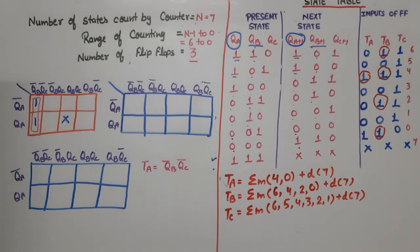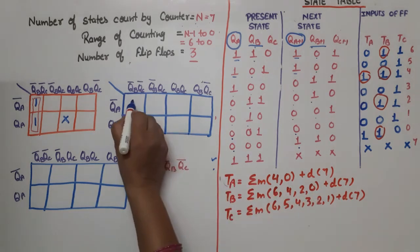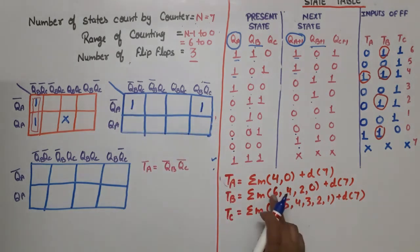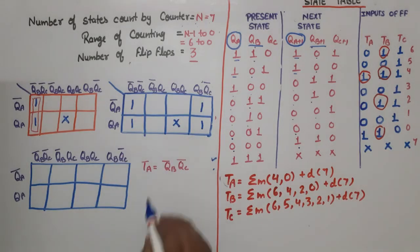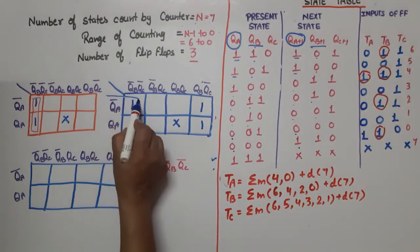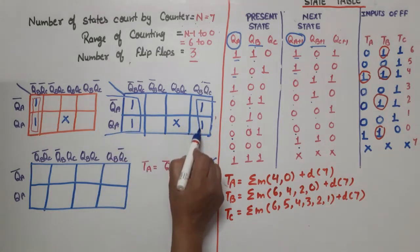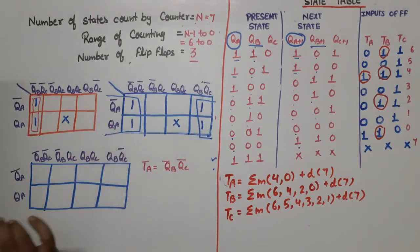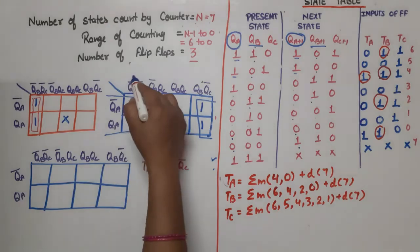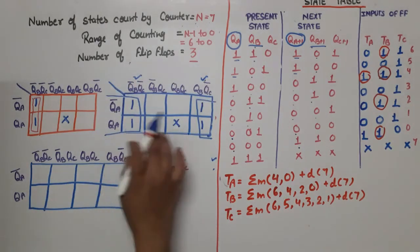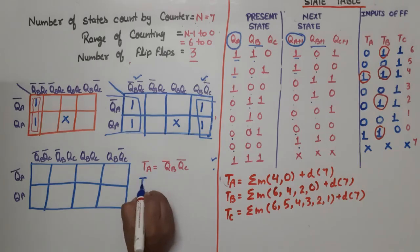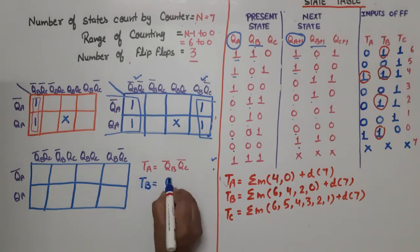For TB, the minterms are 0, 2, 4, and 6, with don't care at 7. One quad is possible. Both rows are used, and the common column variable is QC̄. Therefore, TB = QC̄.